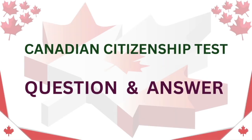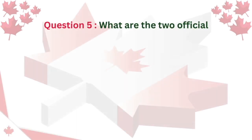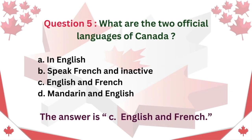Canadian Citizenship Test. Question and answer. Question 5: What are the two official languages of Canada? A. English only. B. French and inactive. C. English and French. D. Mandarin and English. The answer is C: English and French.